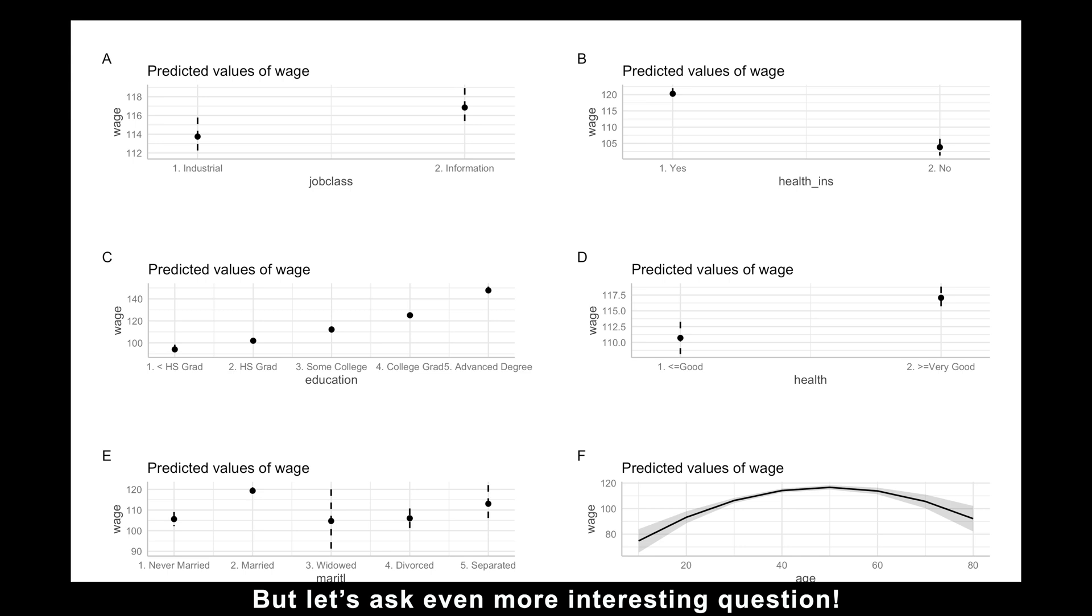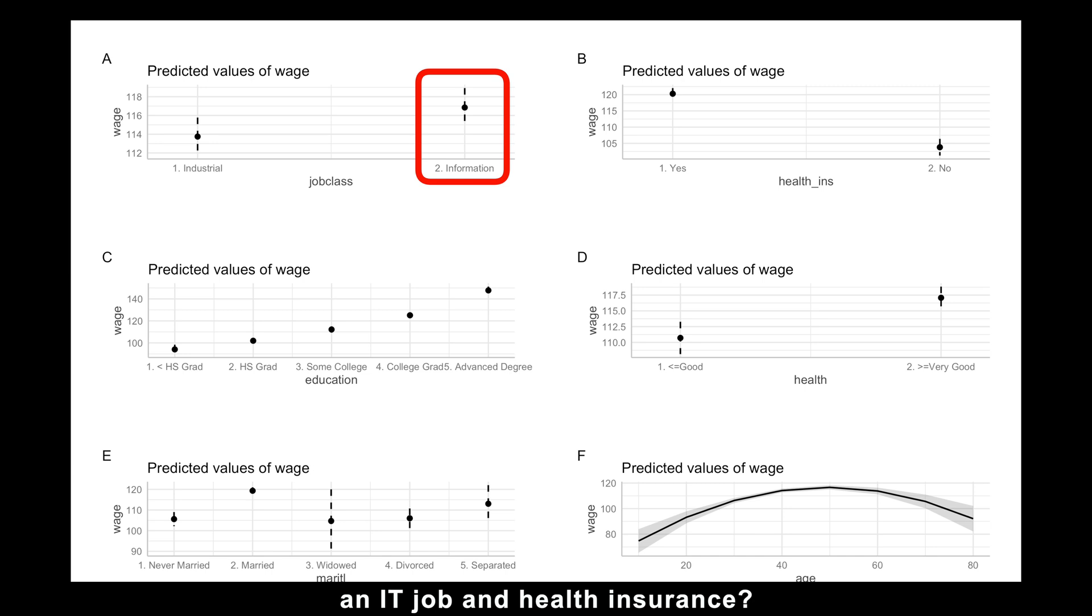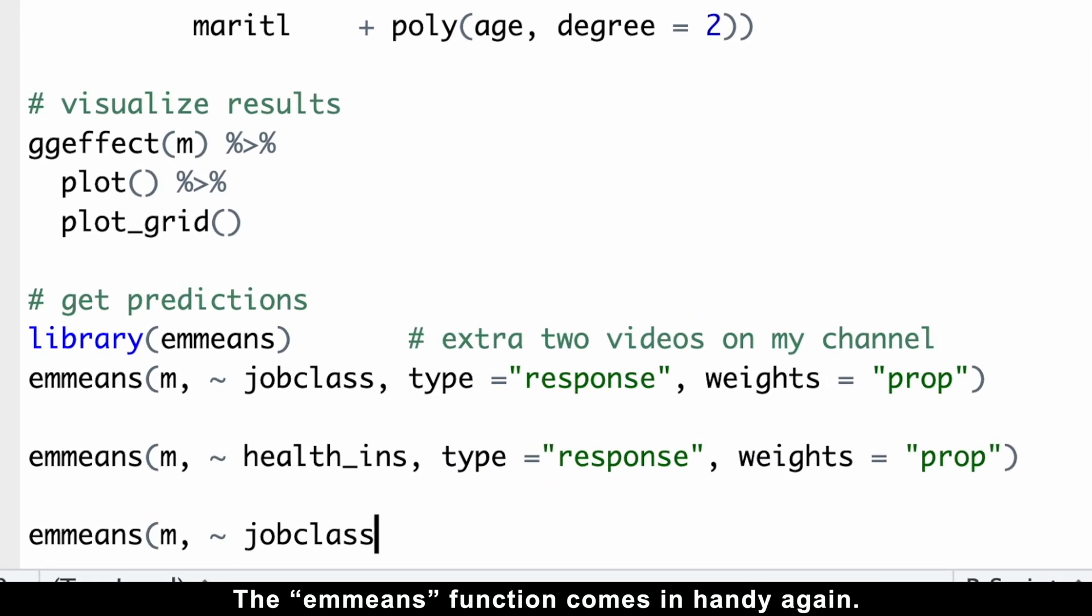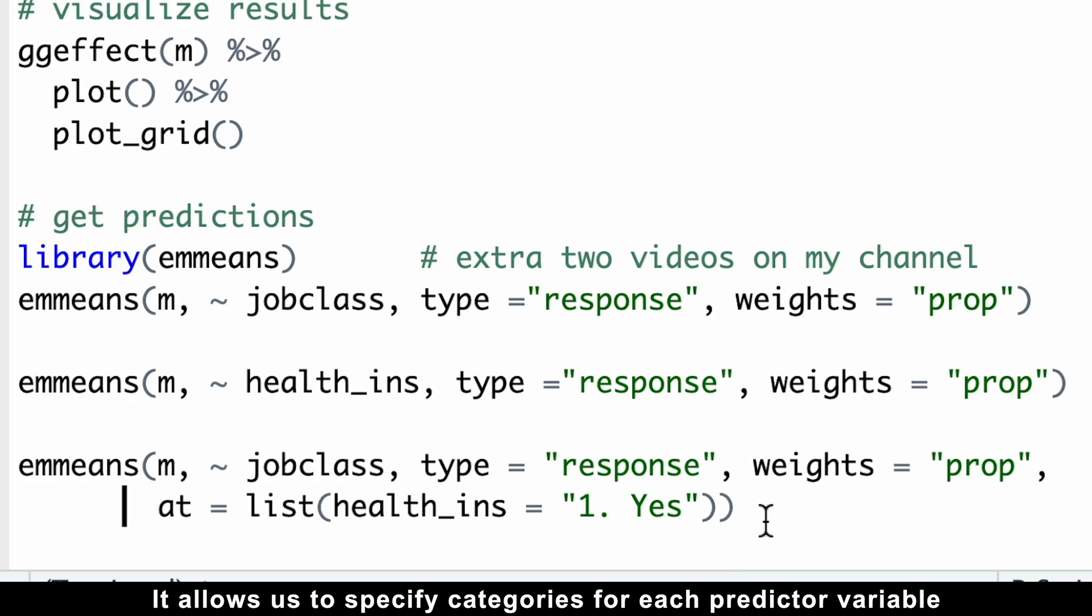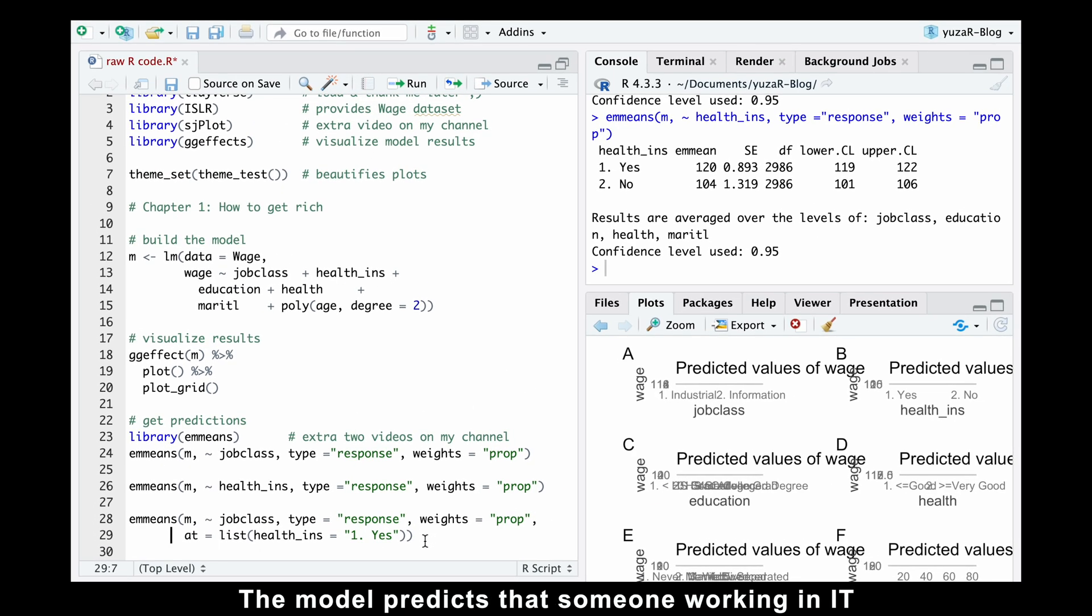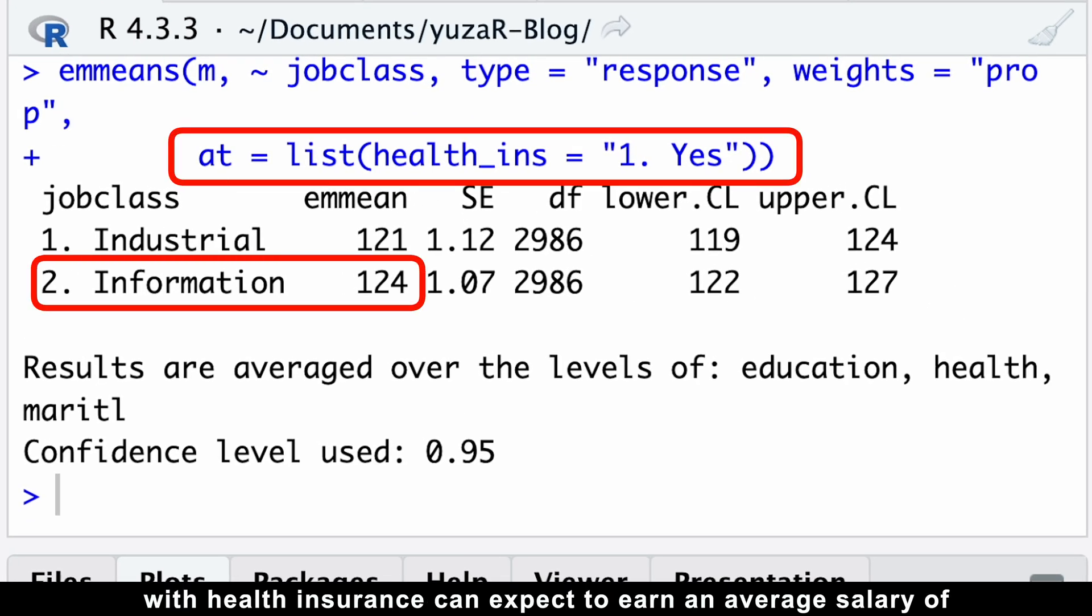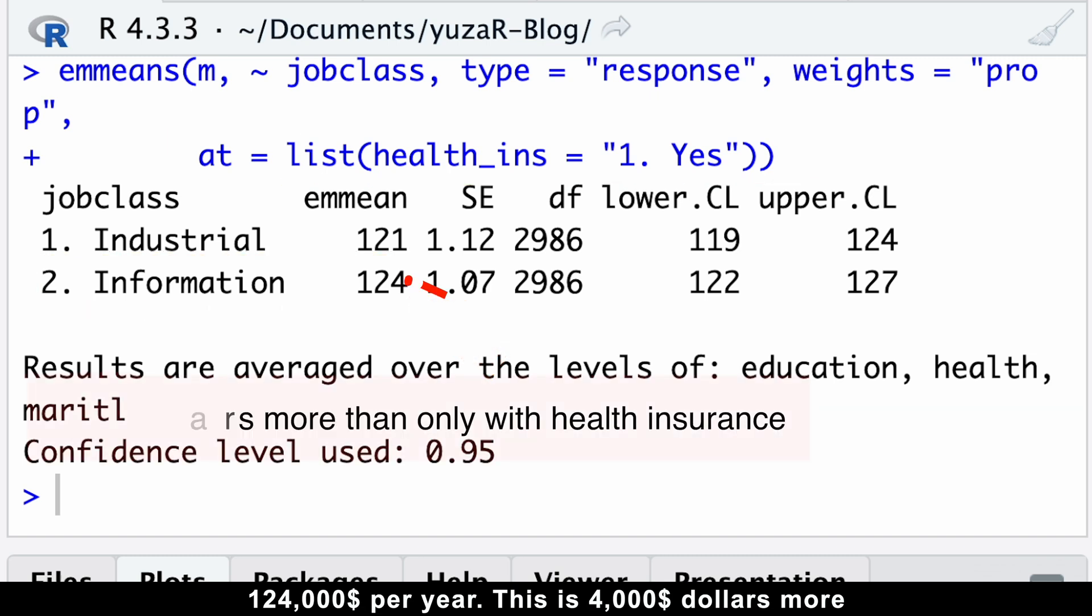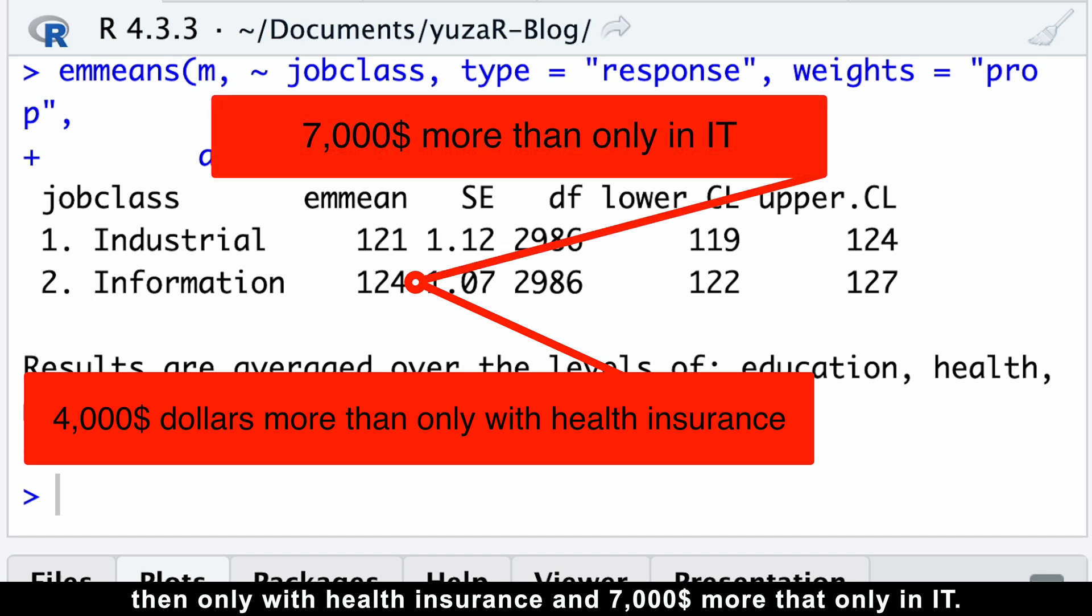But let's ask even more interesting question. Namely, what would we earn if we have both an IT job and health insurance? The emmeans function comes in handy again. It allows us to specify categories for each predictive variable using the at argument. In this case, we are only interested in people with health insurance. The model predicts that someone working in IT with health insurance can expect to earn an average salary of $124,000 per year. This is $4,000 more than only with health insurance and $7,000 more than only in IT.